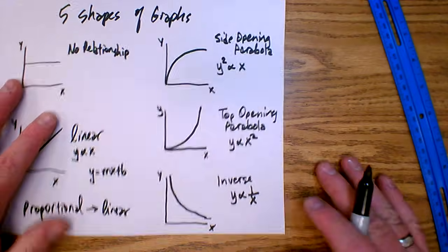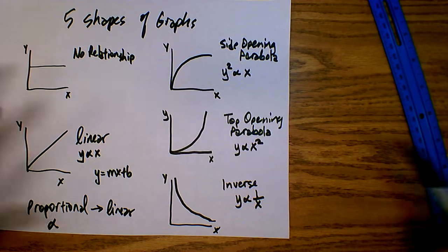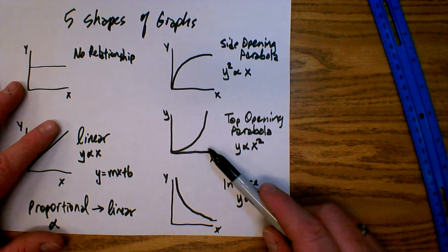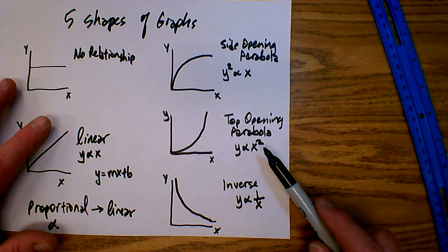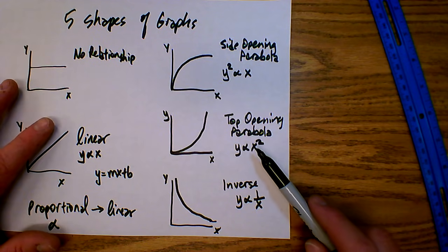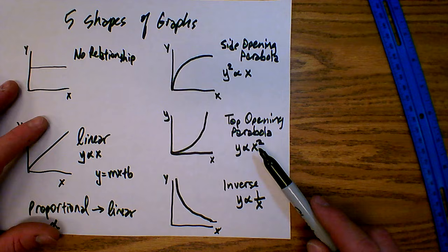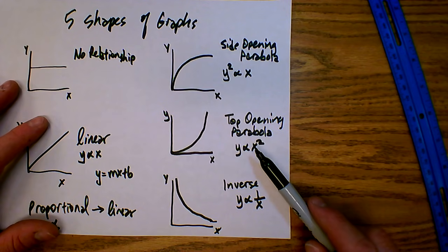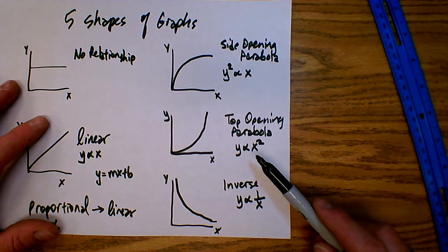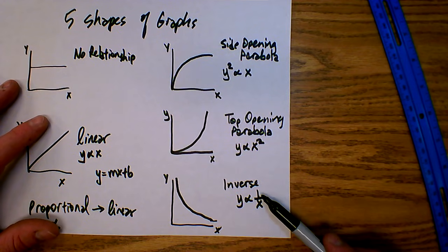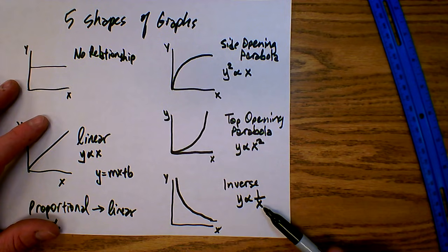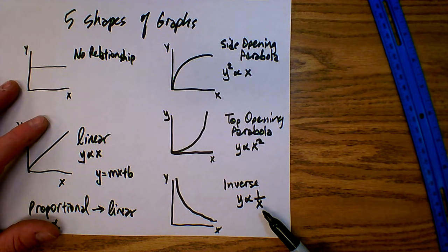Since the intercept is negligible, I don't need to include it in my final equation, which simplifies to T squared equals 4.089 s²/m times L. That basic process works for all non-linear shapes. For a top-opening parabola, the relationship is y proportional to x squared: create a new column by squaring the x values and graph y versus x squared. For an inverse, create a new column of 1 over x values and graph y versus 1 over x. In each case it will come out linear and you can find the slope, intercept, and equation.